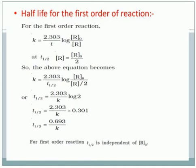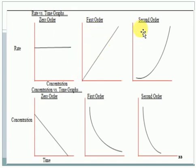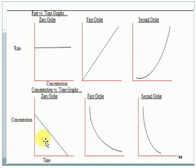Looking at the concentration-versus-time graph: for a zero order reaction, the rate of reaction is independent of concentration. For a first order reaction, t½ is in direct proportions only. For second order reaction, the graph changes slightly. The concentration-versus-time graph is very important to compare zero order, first order, and second order reactions.